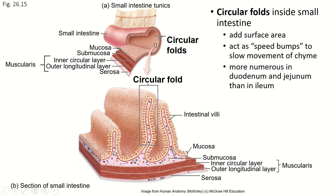These add surface area and also create speed bumps so that the chyme moving through — remember it's a really soupy, very liquidy mix because of all the secretions from the stomach — slows down a little and doesn't rush through, because these circular folds slow it down. There are a lot more circular folds in the duodenum and the jejunum than in the ileum, but they are numerous all the way through.